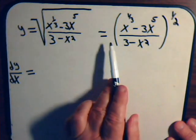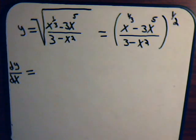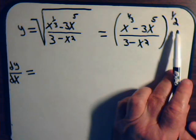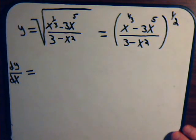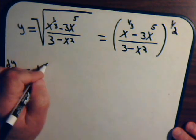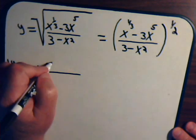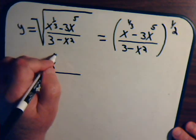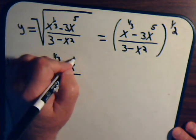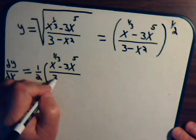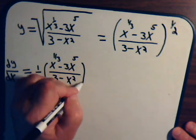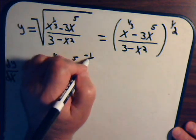We take the 1/2 down, then the new exponent for this expression is 1/2 minus 1, which is minus 1/2. So this will be equal to 1/2 times x to the 1/3rd minus 3x to the 5th, divided by 3 minus x squared, quantity to the minus 1/2.